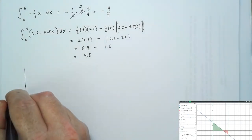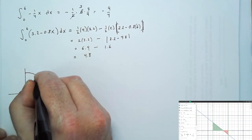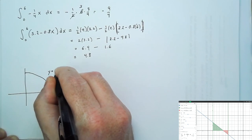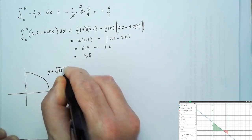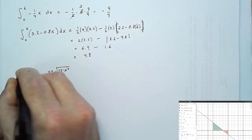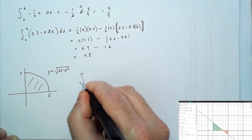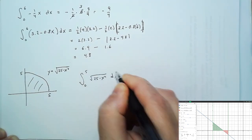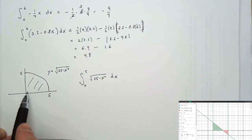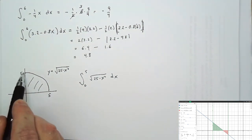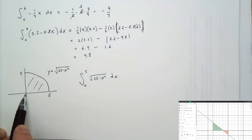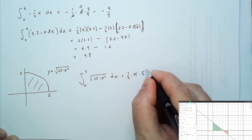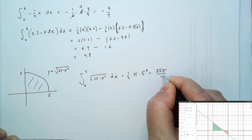We could find other definite integrals using associated geometric problems. For example, with y equals the square root of 25 minus x squared, the integral from 0 to 5 of that function dx is the area under this semicircle in the first quadrant — one-fourth the area of a disk of radius 5. So the answer is 25π over 4.